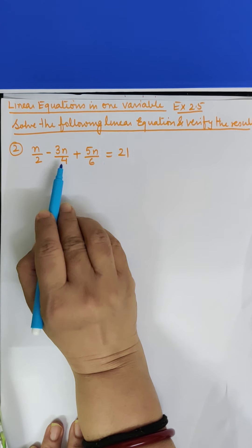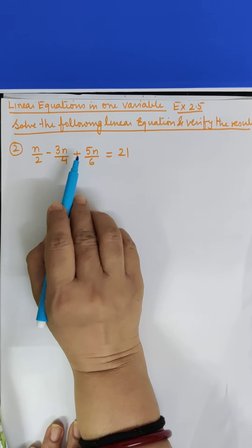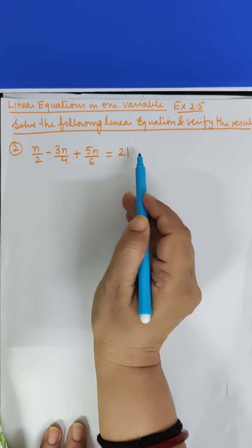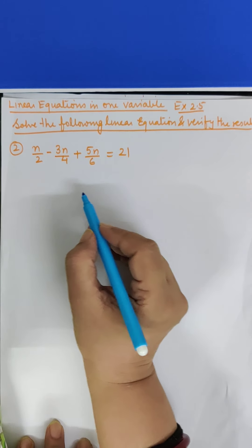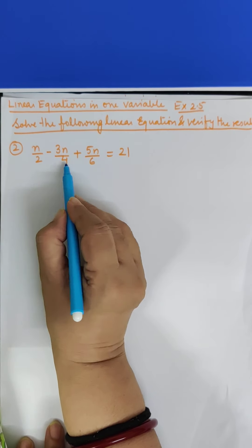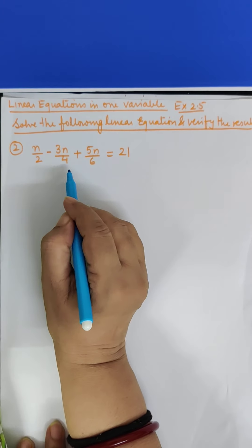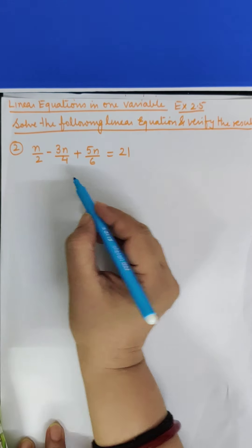All the n terms are on one side and 21 which has no variable is separate. So this means we can directly start solving. We take the LCM of 2, 4 and 6. What is the LCM of 2, 4 and 6? It is 12.